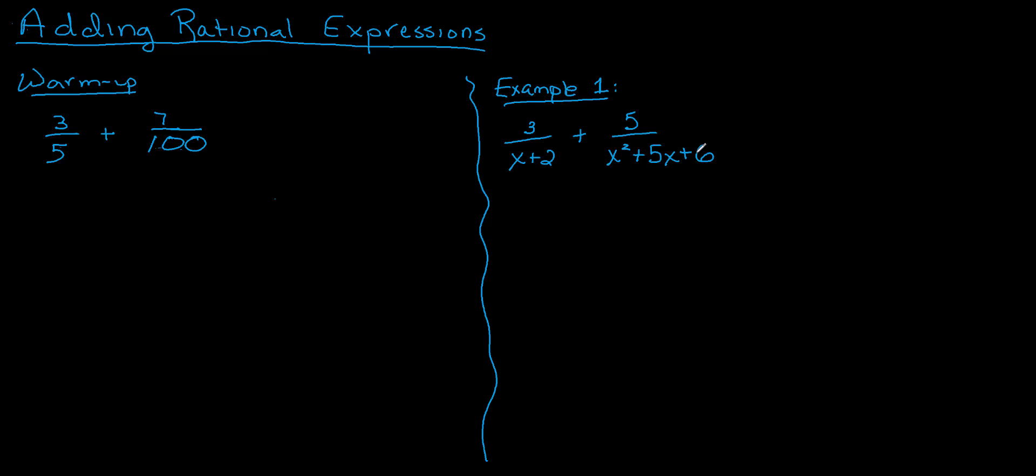To review our steps for adding fractions, the first thing we want to do is find the least common denominator. So the least common denominator means we're going to find a denominator that's common or the same. I need it to be the least common denominator. For example, I could say I'm going to find a common denominator between 5 and 100 of 500, but that's not the least common denominator.